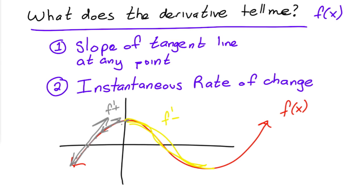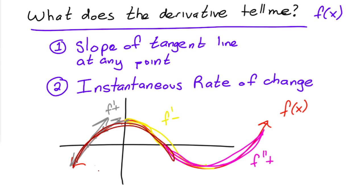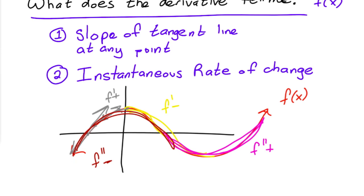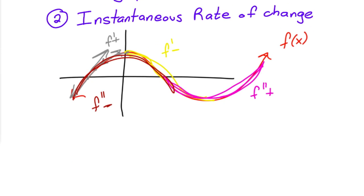We also talked about the second derivative: if your function is concave up, the second derivative is positive, and if your function is concave down, the second derivative is negative. But these are abstract concepts — let's try to interpret all of this in some real-life situations.